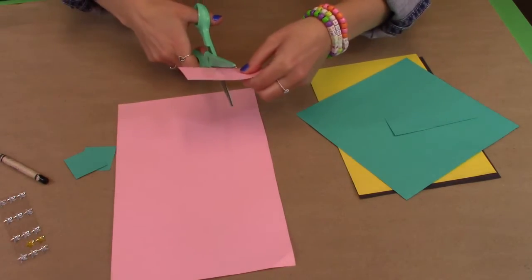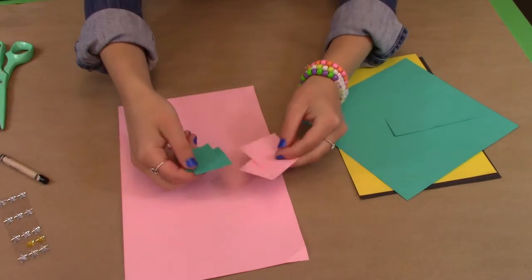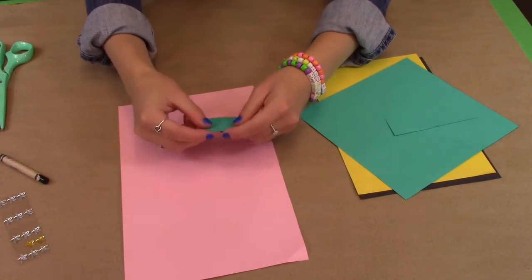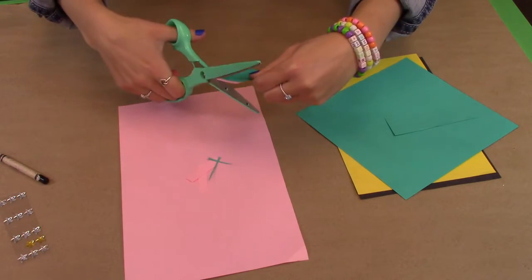I'm going to cut them out of the pink and the teal paper. If you want your squares to be the exact same shape and size, you can line them up like I'm doing and just cut off the excess.